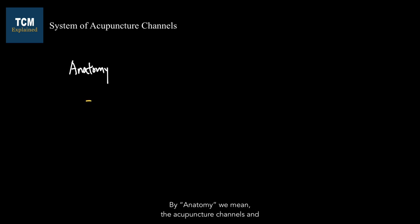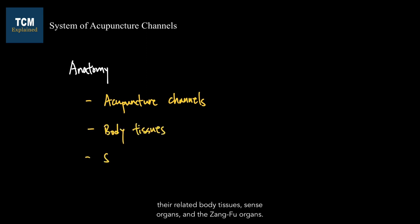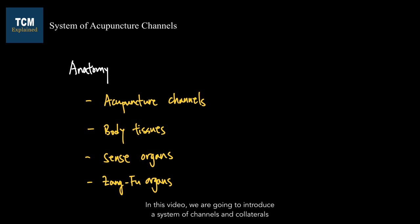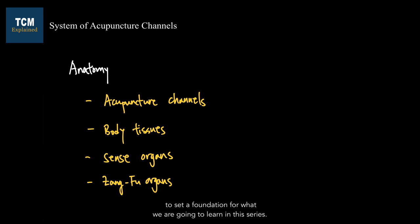From this point onwards, we are on the new series of TCM Anatomy. By anatomy, we mean the acupuncture channels and their related body tissues, sense organs, and the zhangfu organs. In this video, we are going to introduce a system of channels and collaterals to set a foundation for what we are going to learn in this series.